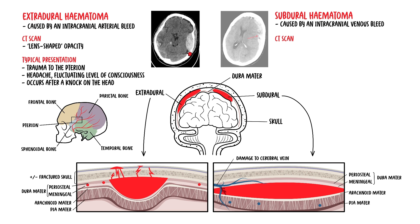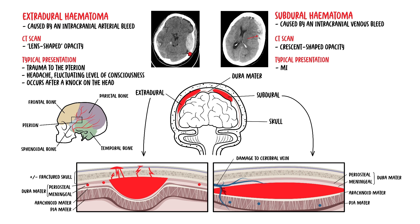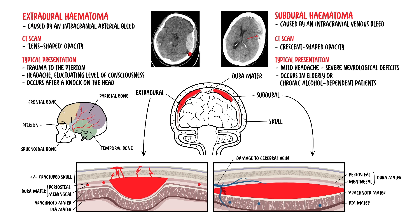On a CT scan, a subdural hematoma appears as a crescent-shaped or banana-shaped opacity. A patient with a subdural hematoma may present with symptoms ranging from mild headache to weakness to seizures and severe neurological deficits. This pathology is more likely to occur in elderly or chronic alcohol-dependent patients due to brain atrophy, increasing the likelihood of vein rupturing.